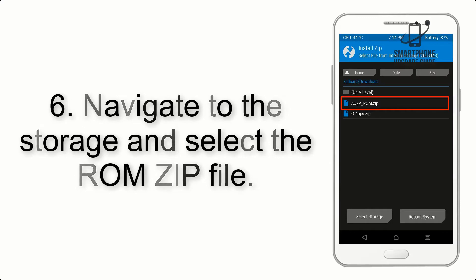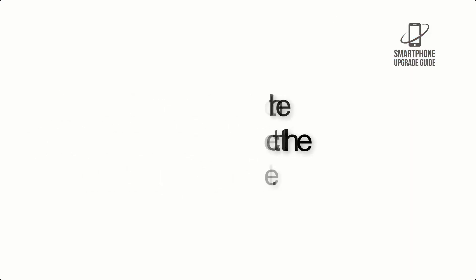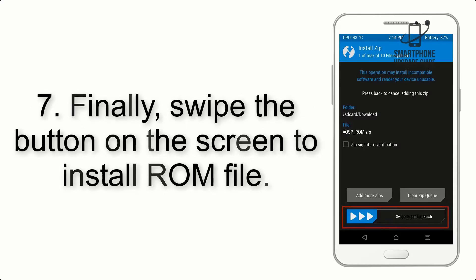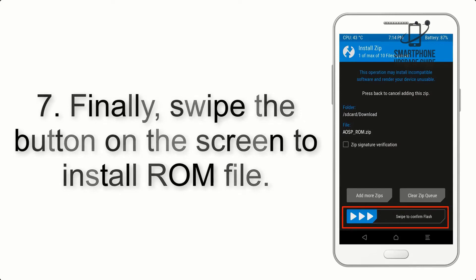Step 5: Go back to the recovery main screen and tap on the Install button. Step 6: Navigate to the storage and select the ROM zip file. Step 7: Finally, swipe the button on the screen to install the ROM file.